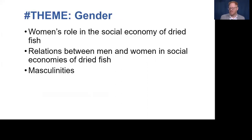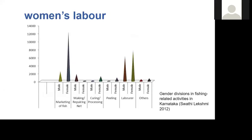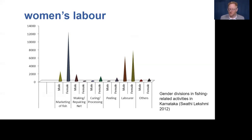Now gender — I've addressed it separately within culture and social relations. It's a very significant topic on its own. We applied the thematic tag of gender to resources describing women's role in the social economy of dried fish, relations between men and women, or potentially masculinities. As Ben Belton and other colleagues have pointed out, much of the literature on fisheries focuses on fishers rather than onshore processors, so women's labor tends to be relatively invisible — but worldwide, the preparation of dried, smoked, and fermented fish is almost universally conducted by women.